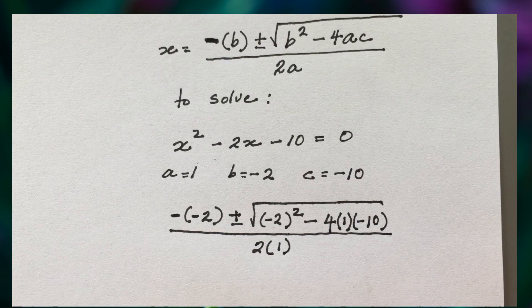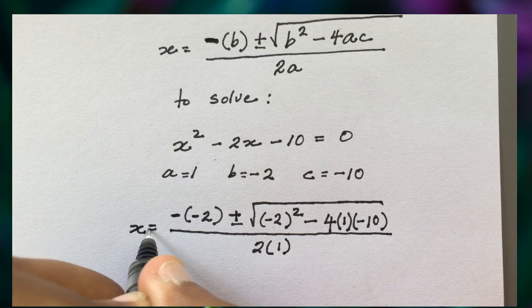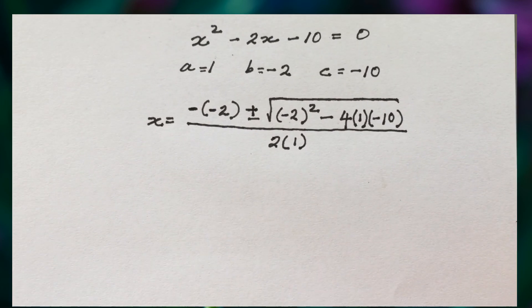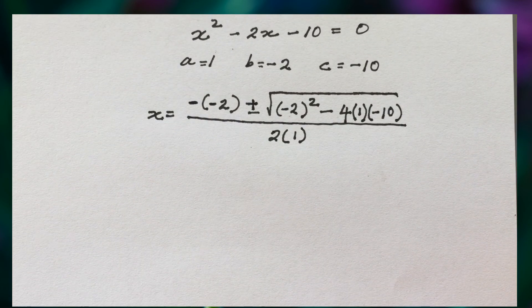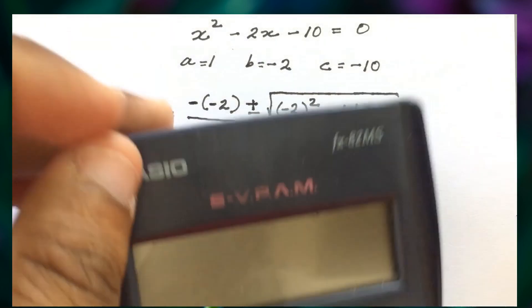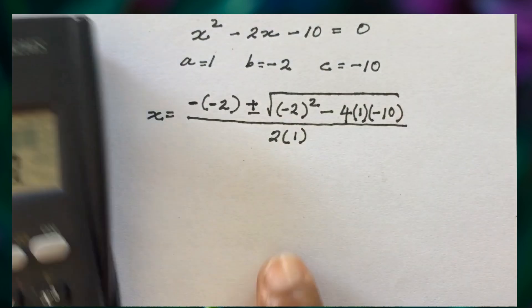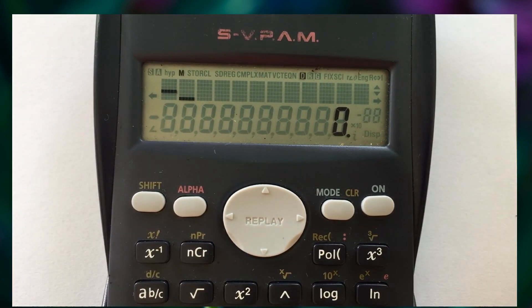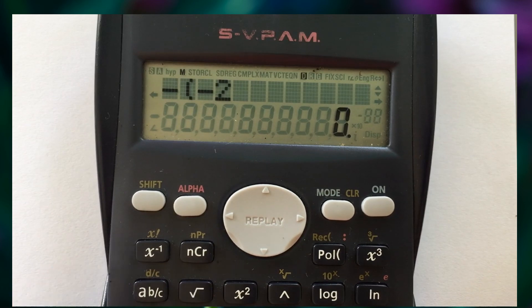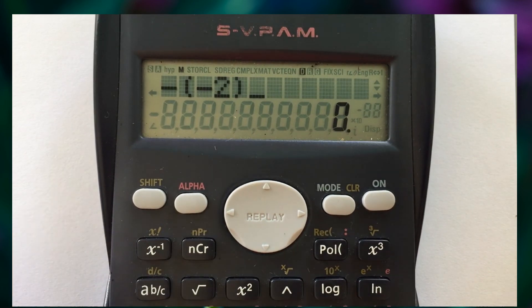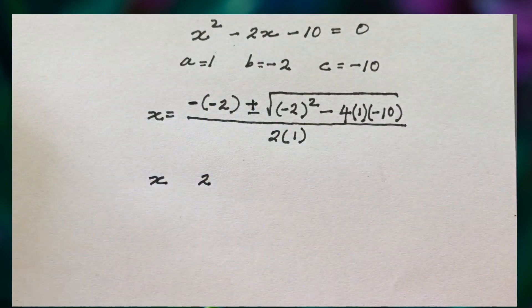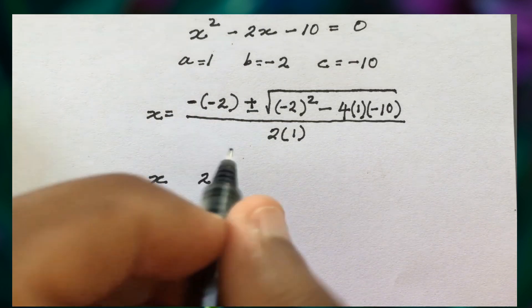So x is equal to all of that — once you've substituted, you're halfway there. Now we work it out step by step. Negative negative 2 gives us a positive 2, because a negative times a negative gives a positive. So we have positive 2 plus or minus the square root of the rest.